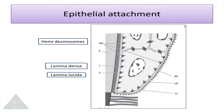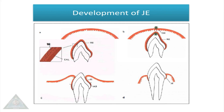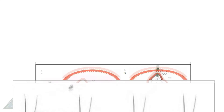The junctional epithelium forms as follows: when the tooth bud forms, it is covered by reduced enamel epithelium. As the tooth erupts, the reduced enamel epithelium fuses with the outer oral epithelium to form the junctional epithelium.